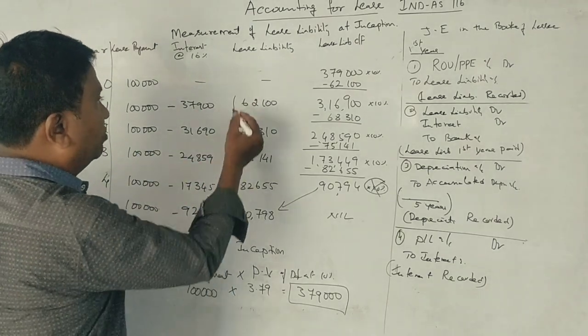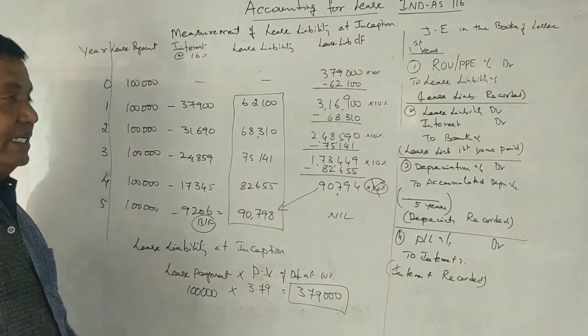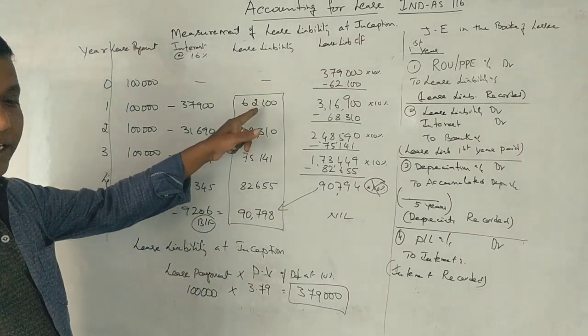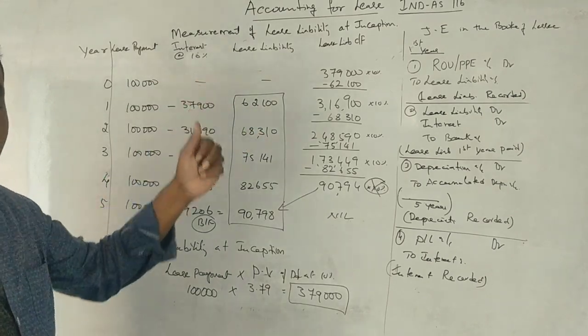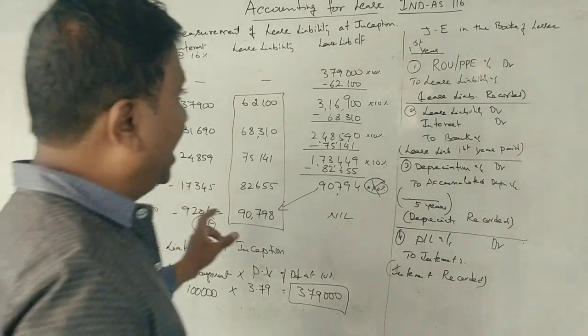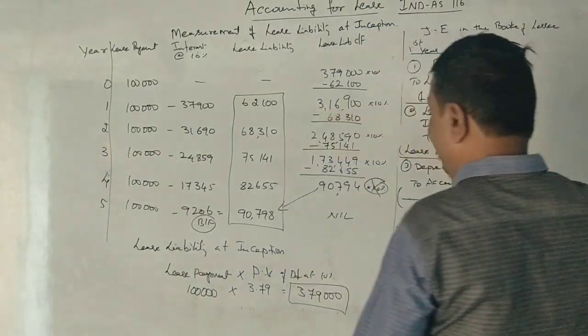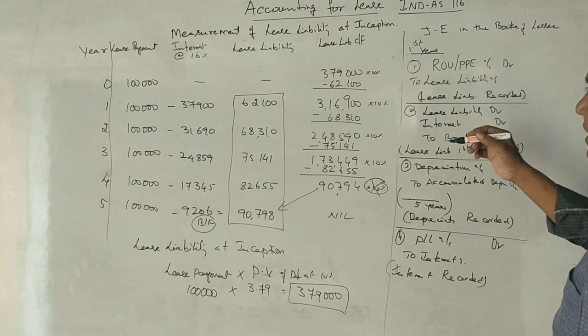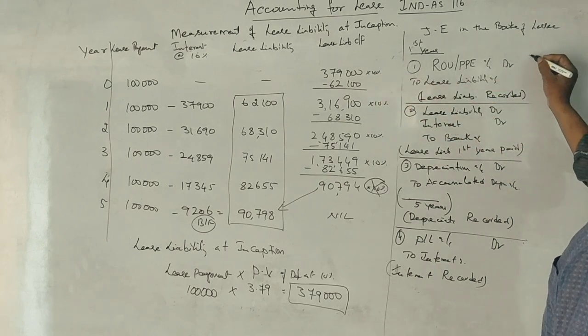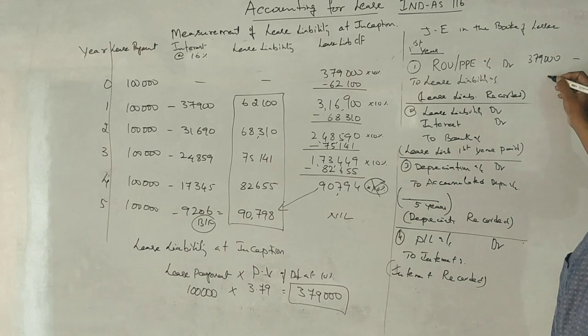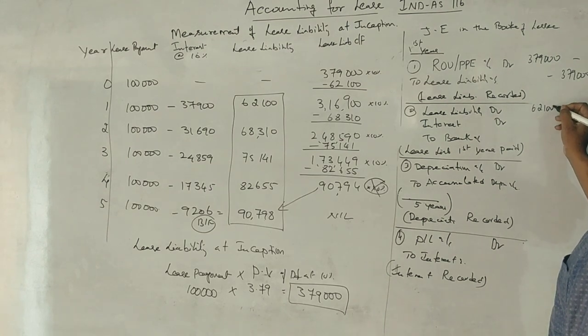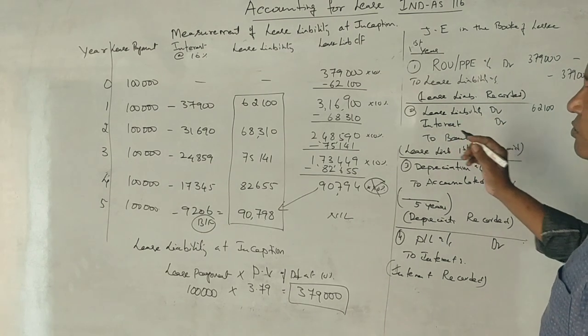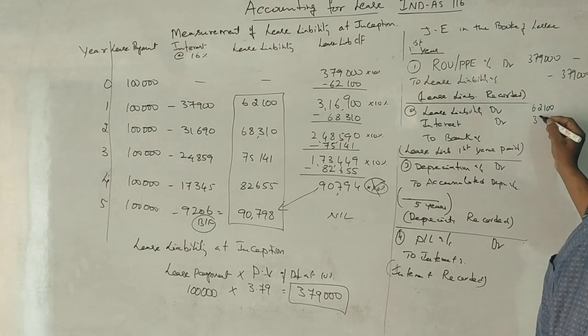Most people increase payment 1,00,000. And at the end of first year, second year, 1,00,000. Now what about the entries? Let's see. Journal entry, so first year inception only 3,79,000, lease liability first year only 62,100, again interest 37,900.